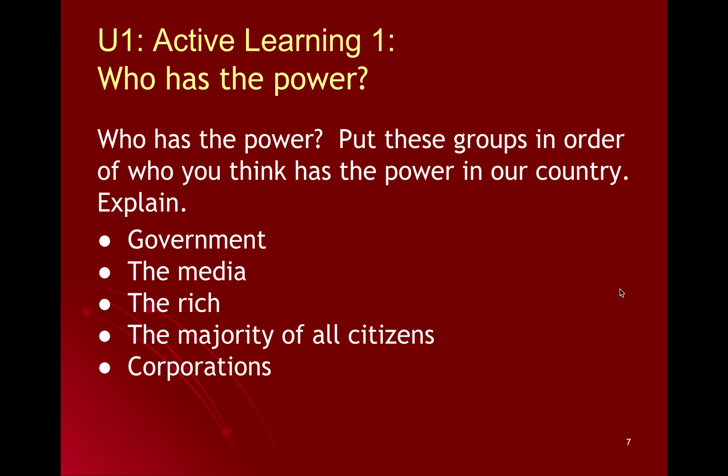This first active learning is about power, because government is about power — the government gets to decide who gets power and how they can use it. I want you to consider these five groups and put them in order from most powerful at the top to least powerful at the bottom, thinking in terms of our country today. Your options are: the US government, the media, the rich, the majority of citizens, and corporations.